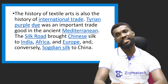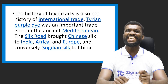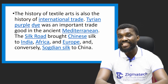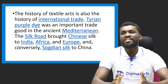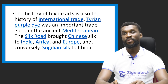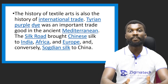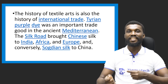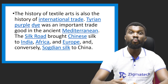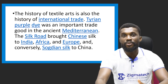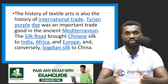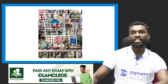The history of textile art is also the history of international trade. During the Tyrian period, purple dye was an important trade good in the ancient Mediterranean. The Silk Road brought Chinese silk to India, Africa, and Europe. Textile design brought about international trade — in Nigeria, for example, we used to grow and export cotton, which increased our GDP. Unfortunately we no longer produce cotton as an export commodity.